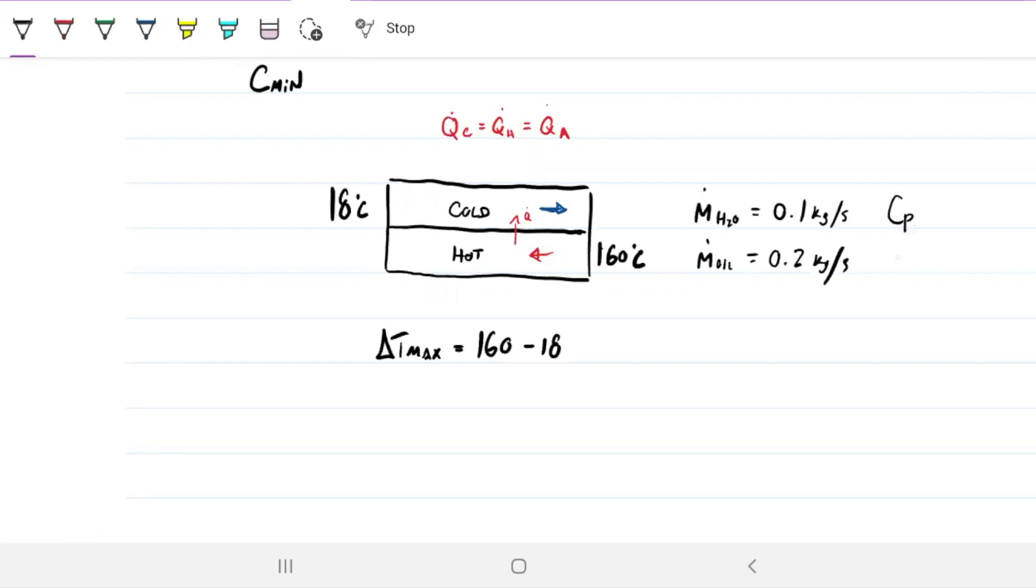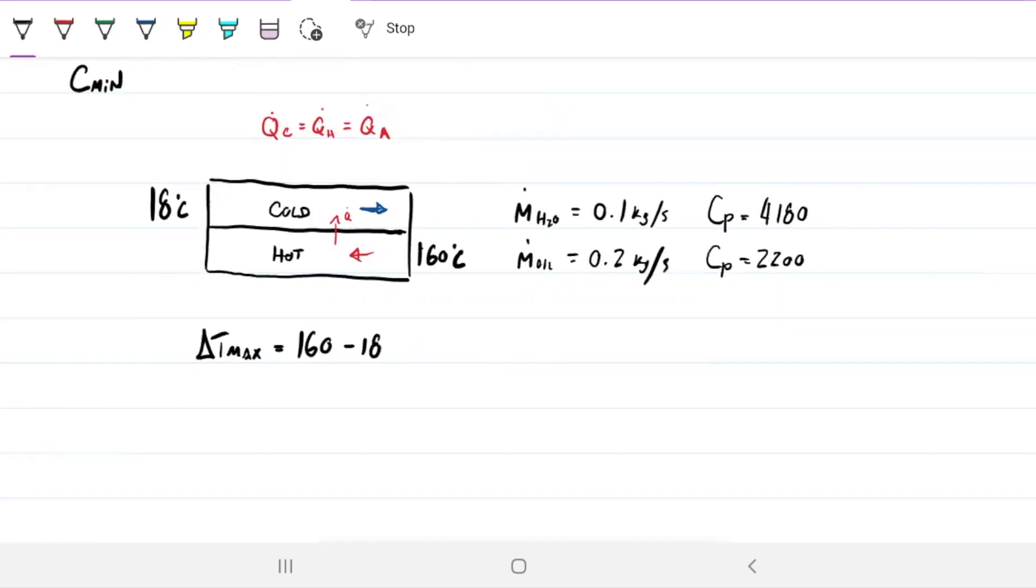What about C_Ps? C sub P of water is 4180, and of oil is 2200 joules per kilogram Kelvin on both instances.